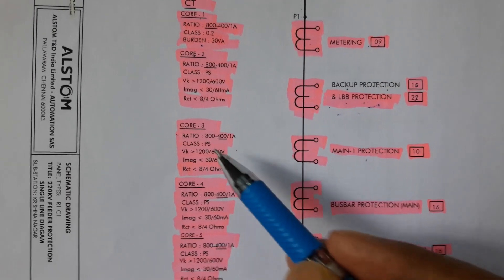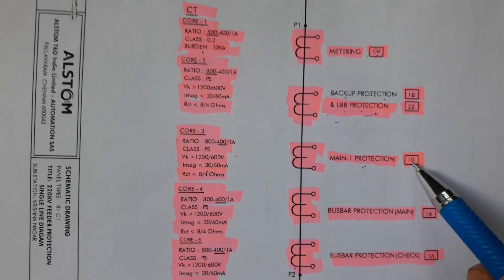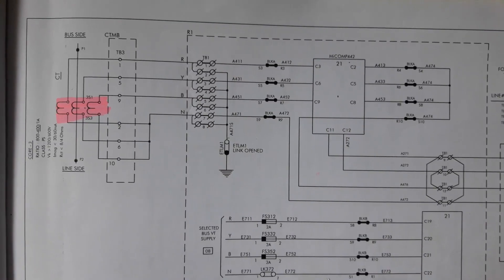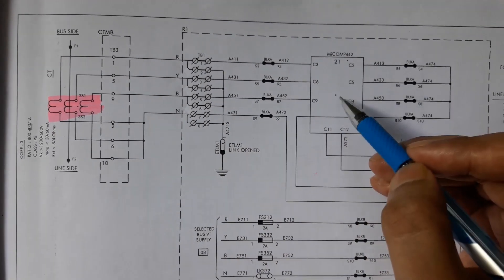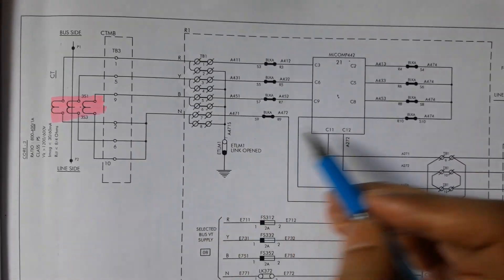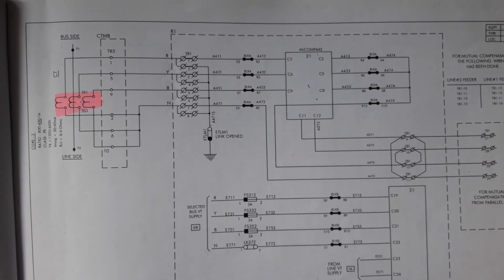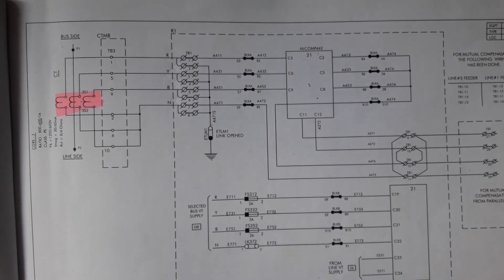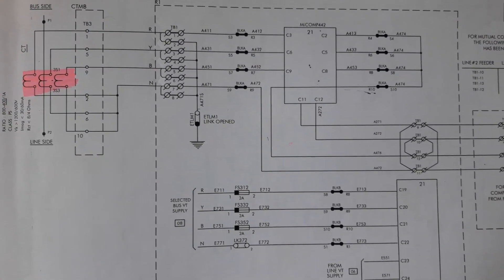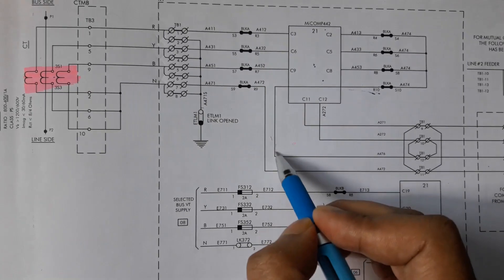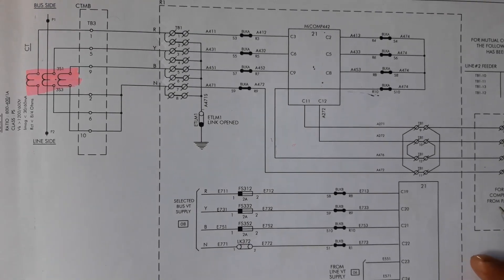The third core of the CT is connected with main zone 1 protection or distance protection, described in sheet number 10. Core 3 is connected to the distance protection relay. The connection is similar to cores 1 and 2, but when a parallel feeder exists, the neutral connection is different — it goes to the adjacent panel for mutual compensation features.